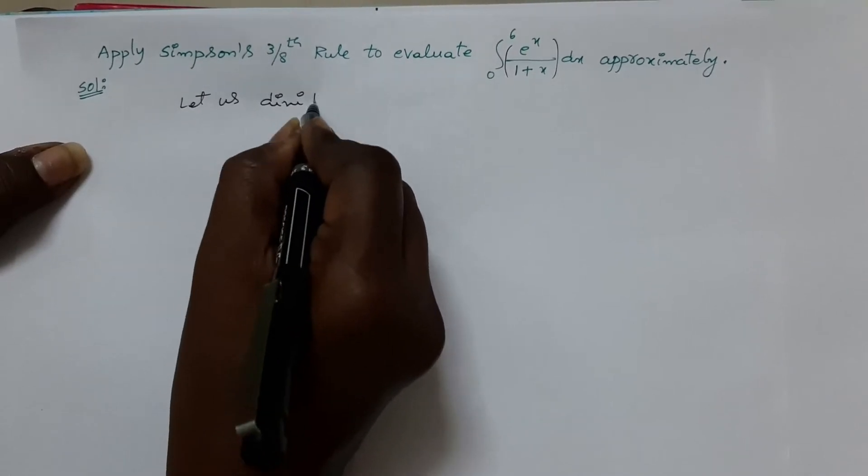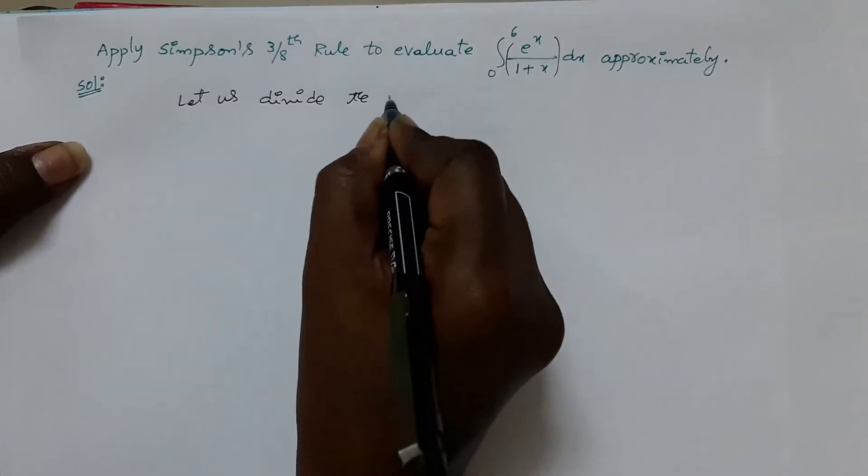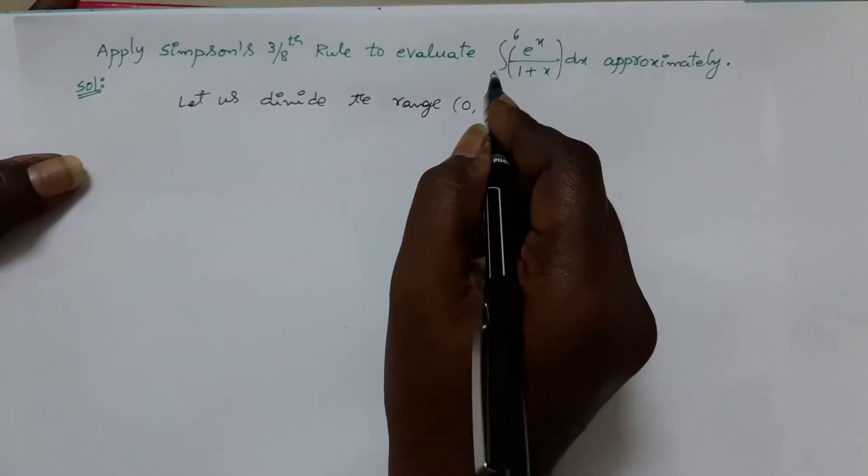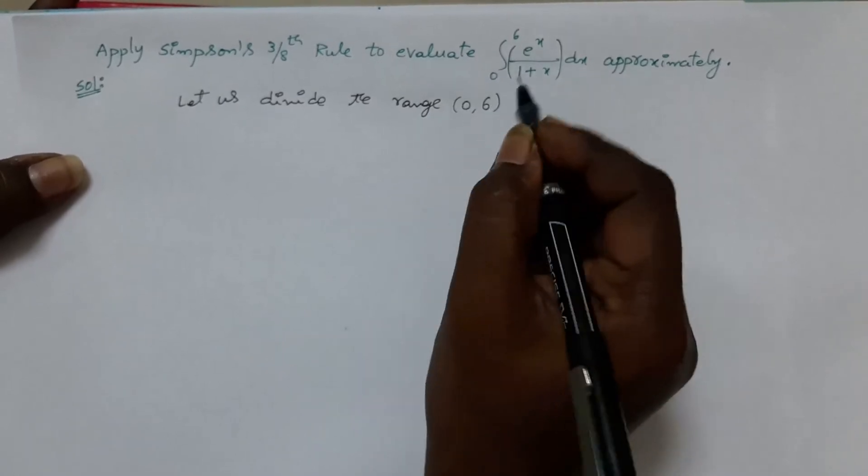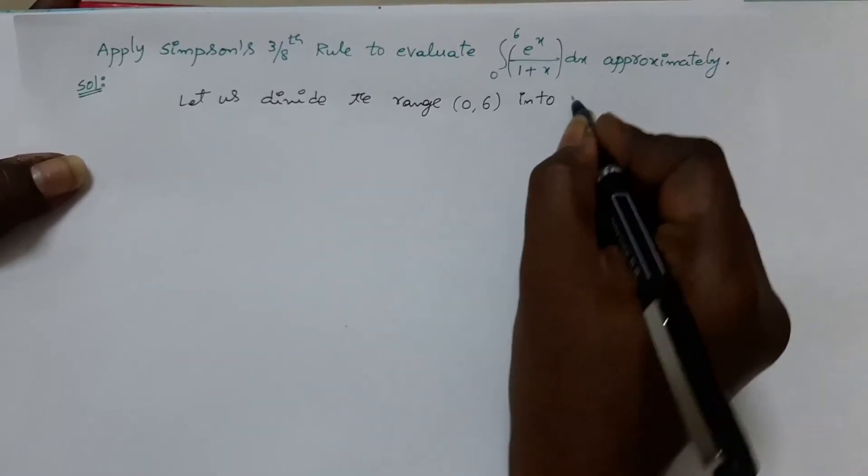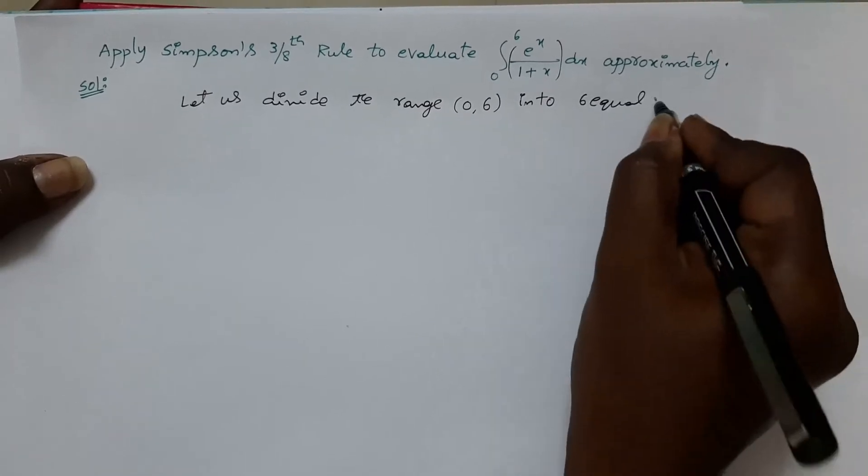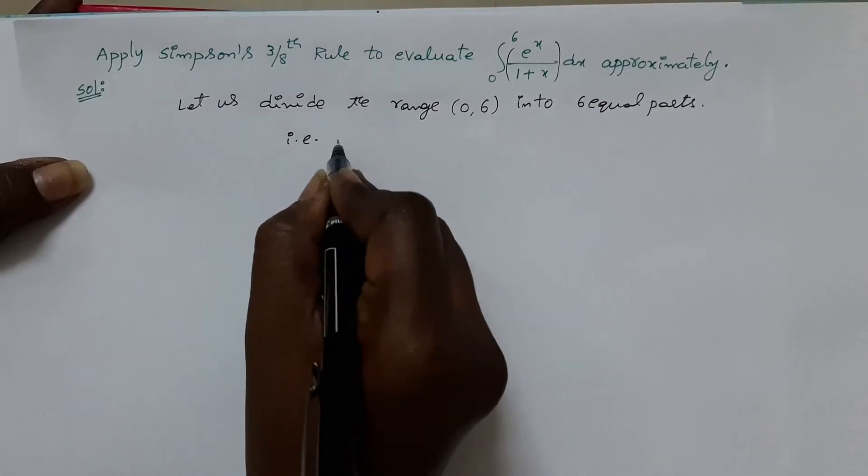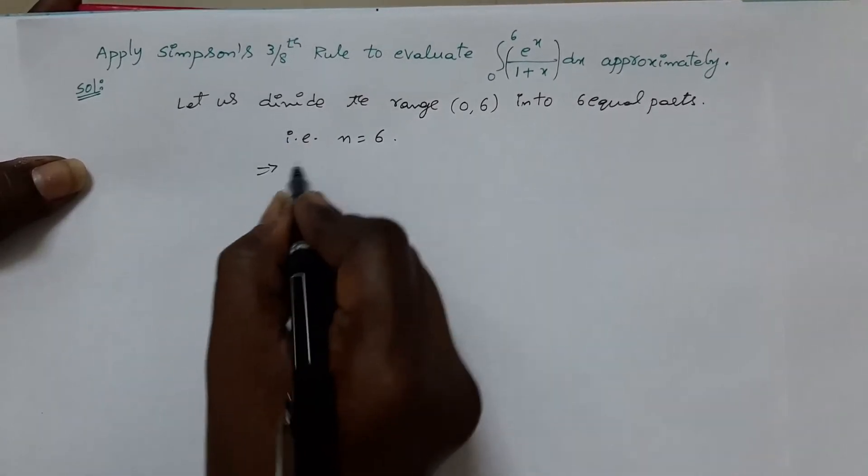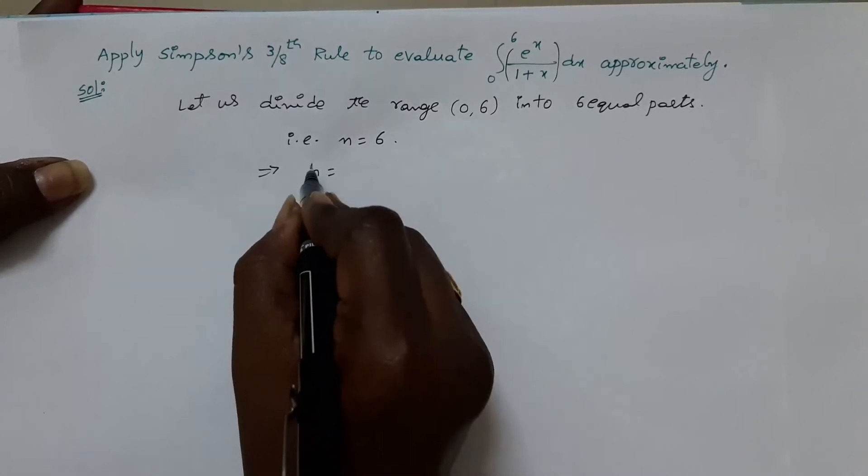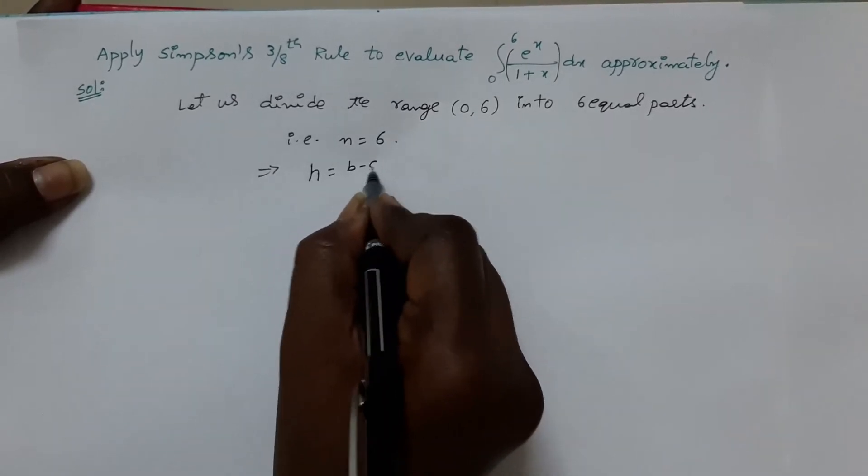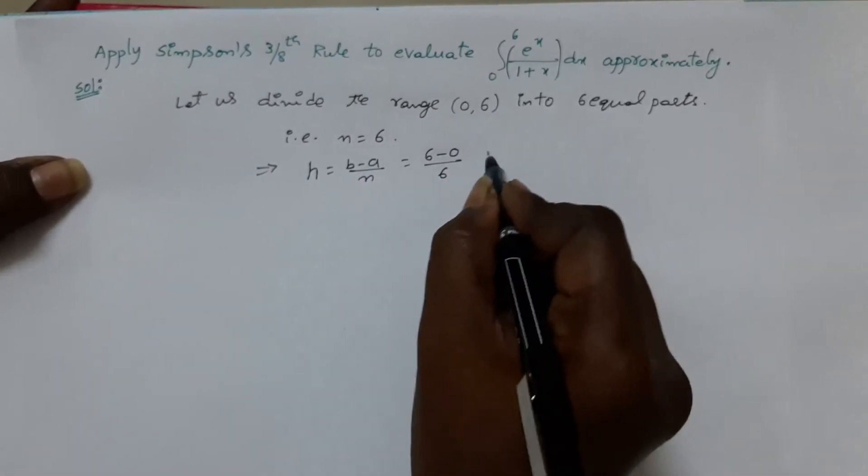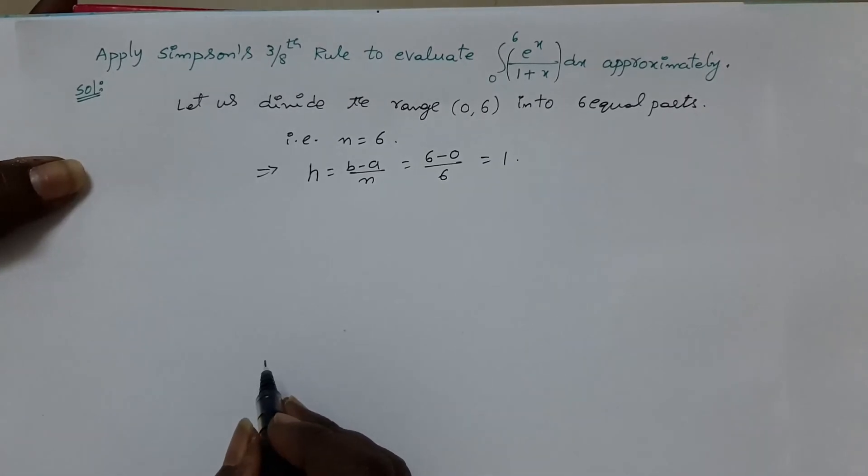Let us divide the range, which is the limits of the given interval, 0 to 6, into 6 equal parts. 6 is a multiple of 3, so no problem. That is, n is equal to 6. Immediately, we have to find out step size, or interval difference. h equals b minus a by n which is equal to 6 minus 0 by 6 is equal to 1. So, interval difference is 1.